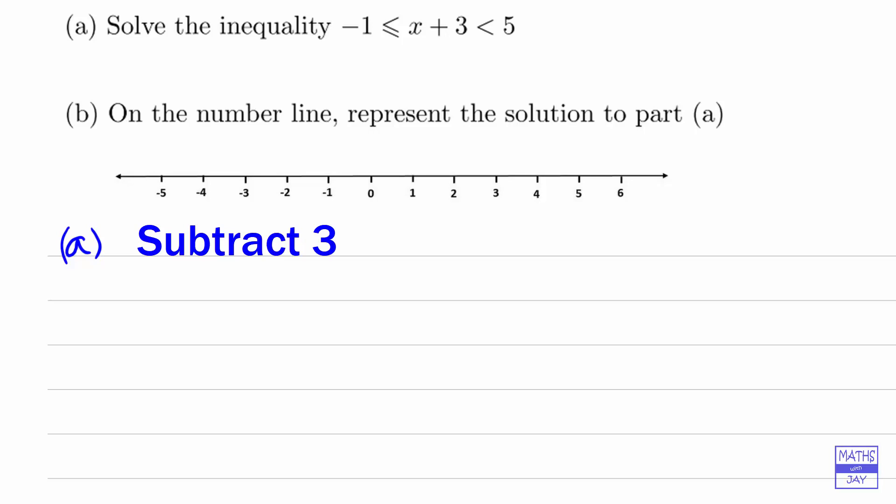So -1 take away 3 will be -4, and then taking 3 away from x+3 gives us the x, and that's what we want, and then taking 3 away from 5 gives us 2.